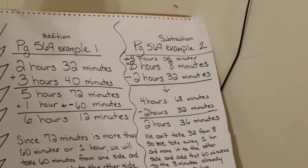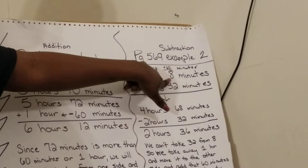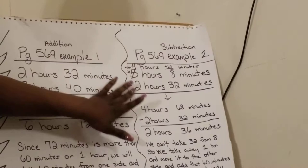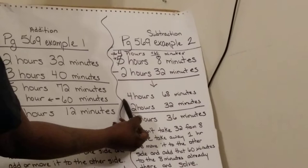What I did was I took my problem and cleaned all this up and made it clear for you. I know I have 4 hours here. I added 60 minutes to the 8 minutes that's already there, and 60 plus 8 becomes 68 minutes. So now my new subtraction problem is 4 hours 68 minutes minus 2 hours 32 minutes.